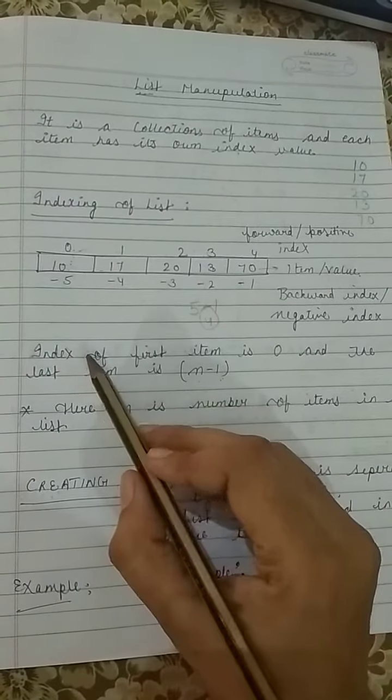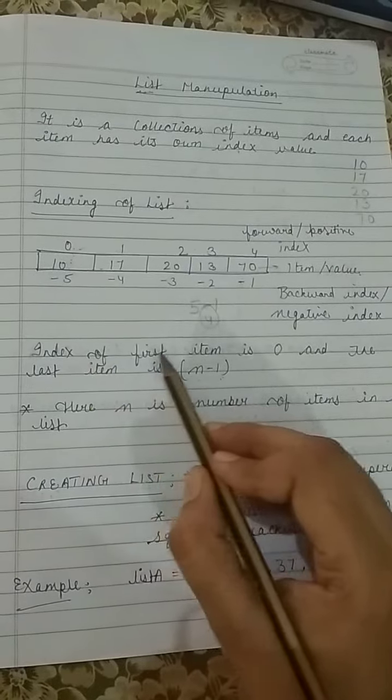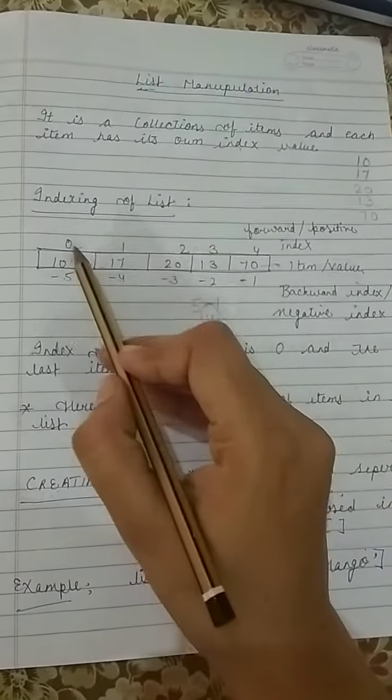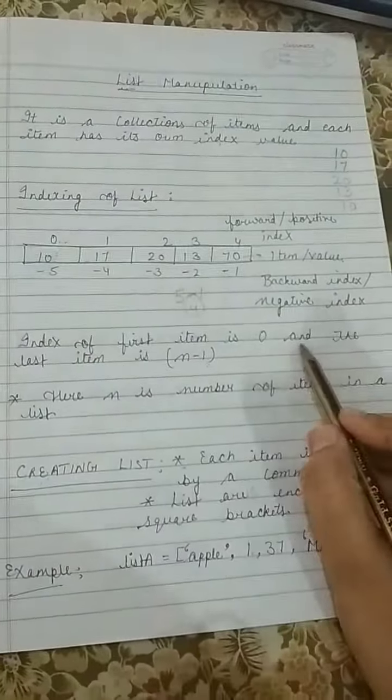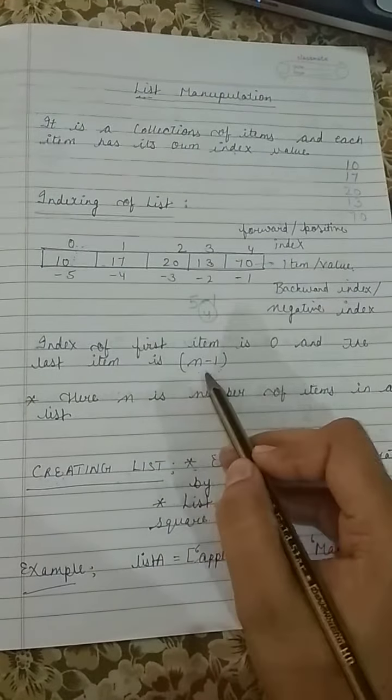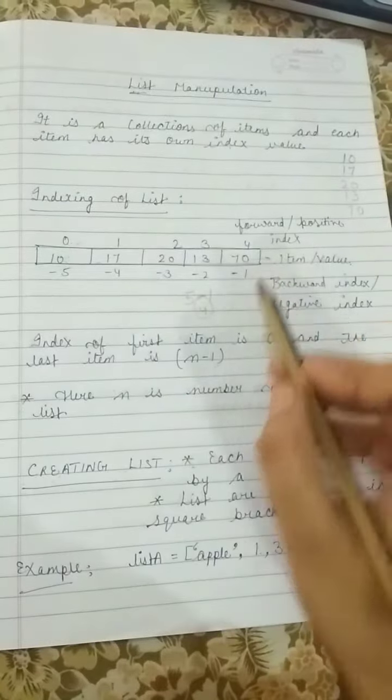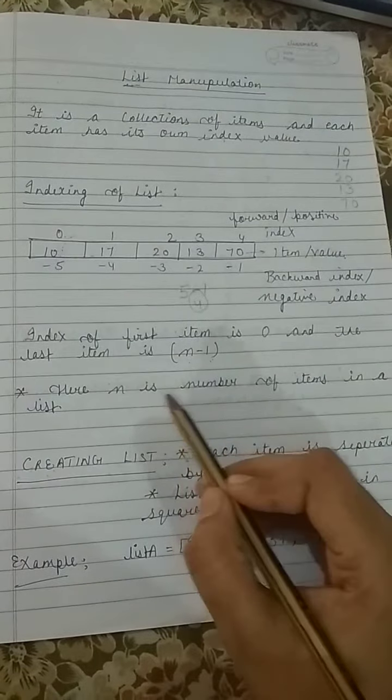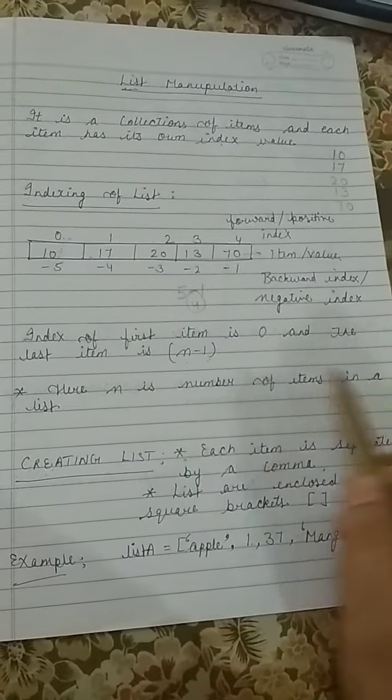One thing is notable. Index of the first item is 0, like here. And the last item is n minus 1, as I told you. What is n? n is the number of items in a list.